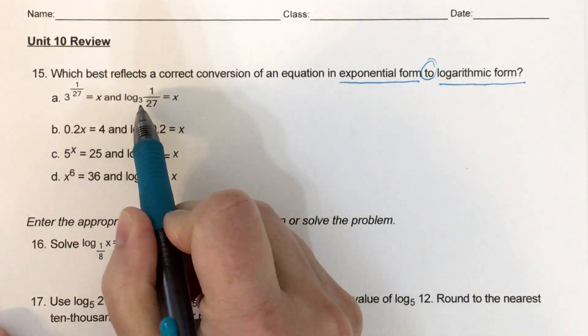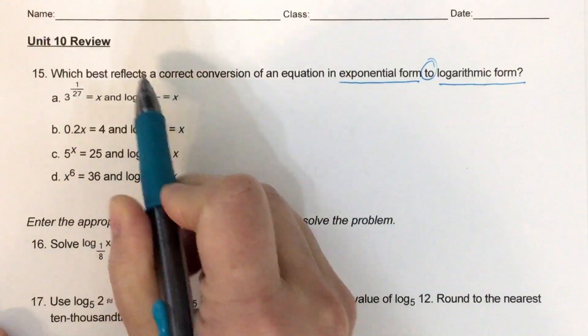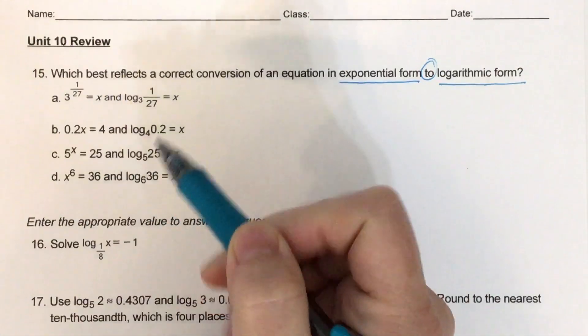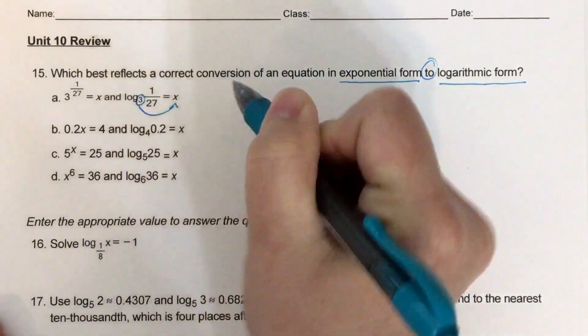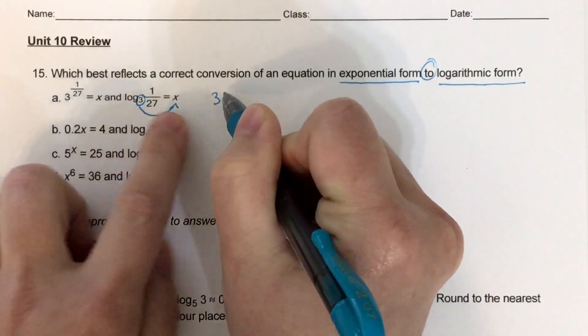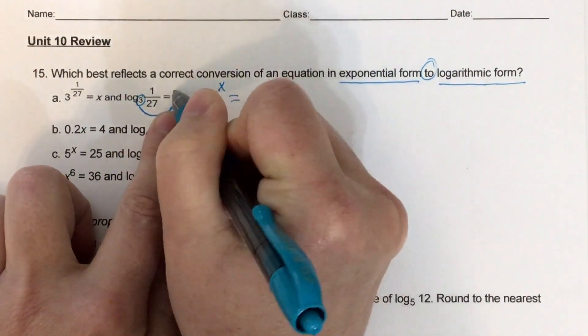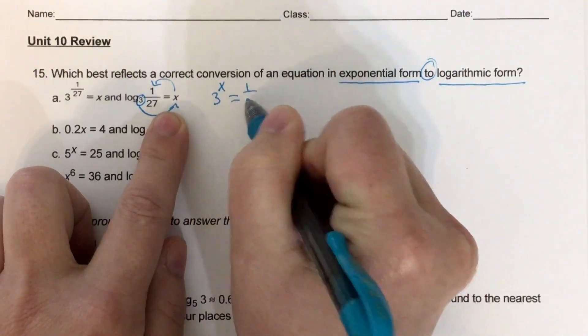Quite honestly, I like to start with the logarithmic form and turn it into exponential. That's just easier for me. So we start with the base, go around the world.